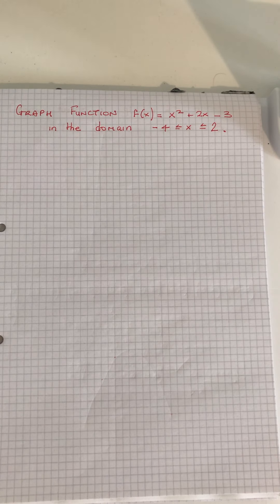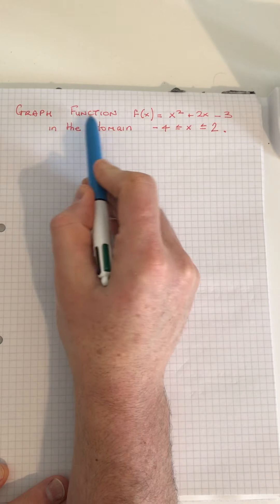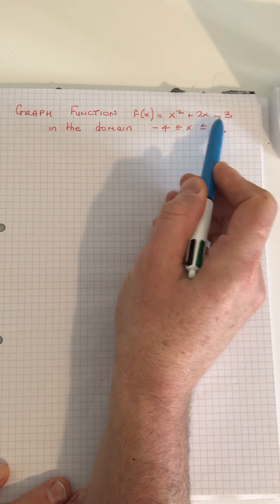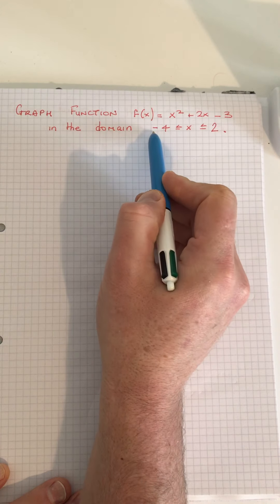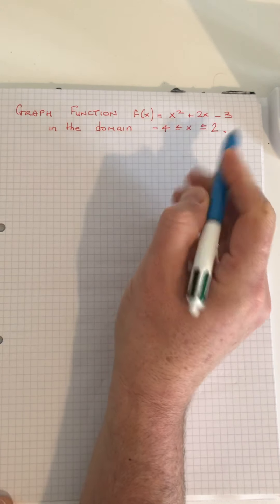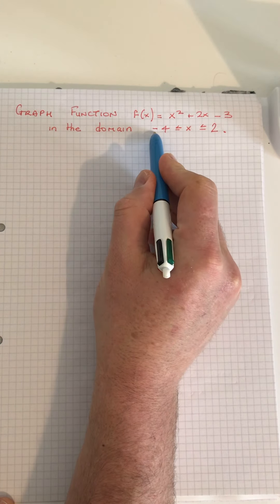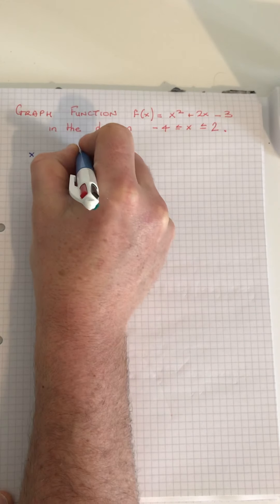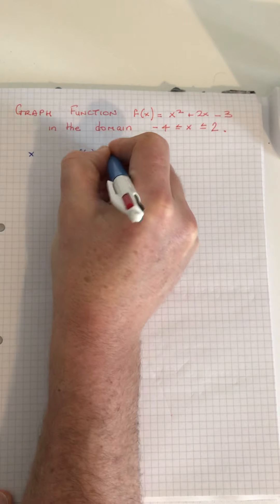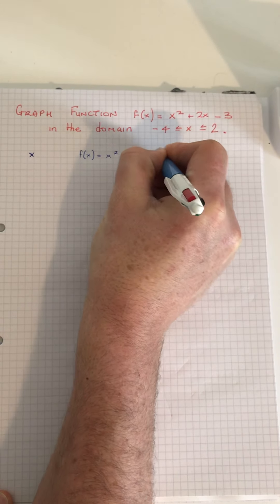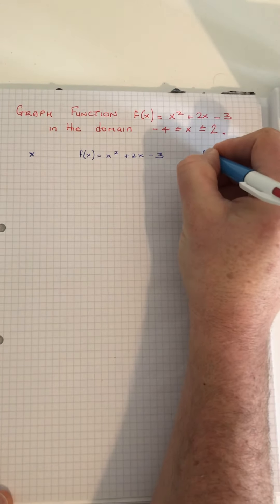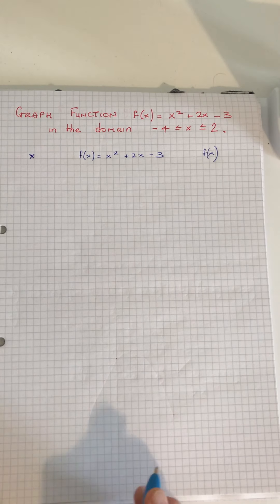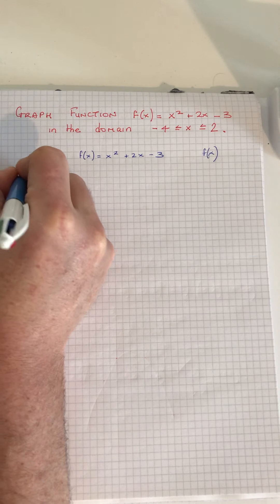Here we have a function and we want to draw a graph of f(x) = x² + 2x - 3 between minus 4 and 2. So we're going from minus 4 up to 2, and our function is f(x) = x² + 2x - 3. We're going to get out our f(x) values, our points.